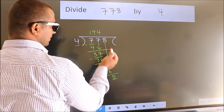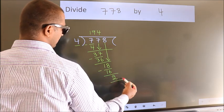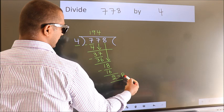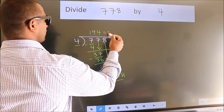No more numbers to bring down, so we stop here. This is our remainder. This is our quotient.